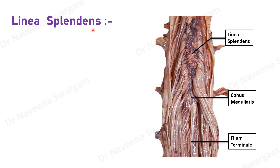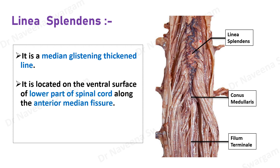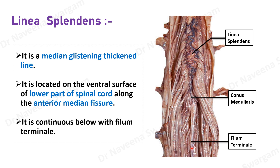Linea splendens is a median glistening thickened line along the anterior median fissure. It is located on the ventral surface of the lower part of the spinal cord and continues below with the filum terminale.